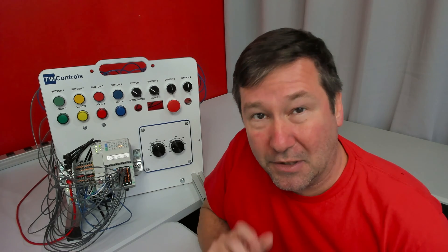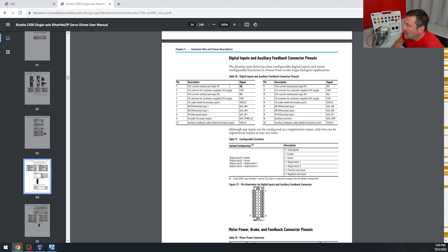Then we have the enable. Let's talk about the enable because in the previous video, we took switch one and wired it to pin one, which is input number one on the Kinetics. That was a sinking input, and we went through how that meant we had to feed 24 volts to the other side of the switch.